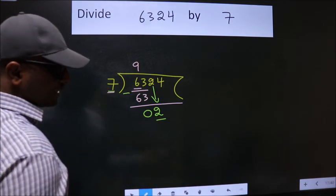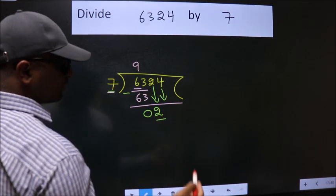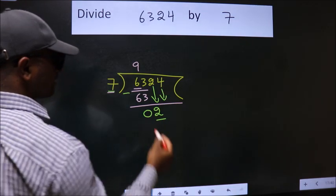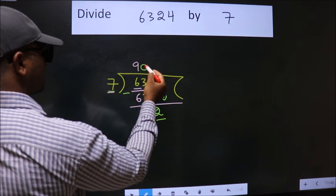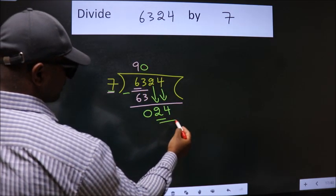So we should bring down the second number. And the rule to bring down second number is put 0 here. Then only we can bring down this number. So 24.